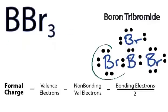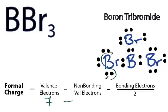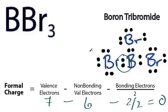We'll do this bromine first right here. So bromine has 7 valence electrons. We look on the periodic table. Non-bonding. These ones right here that aren't forming bonds. There are 6 of those. And then bonding, these two right here. So we'll put 2 over 2. 7 minus 6 minus 1 equals 0.